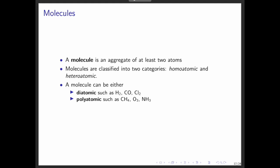Molecules can be homoatomic, made of atoms of the same kind, like O2 or Cl2, which represent elements, or heteroatomic, made of different atoms in a fixed ratio, like H2O or CO2, which represent compounds. Molecules can also be classified by size, such as diatomic molecules like H2, CO, or Cl2, or polyatomic molecules like CH4, O3, or NH3.